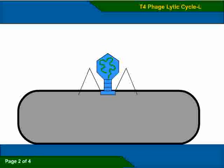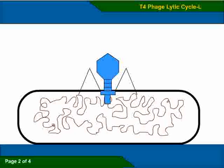Then the sheath of the phage contracts, punching a hole onto the bacterial wall. The hollow core of the tail then pushes through the cell wall, allowing its DNA to move into the cell.